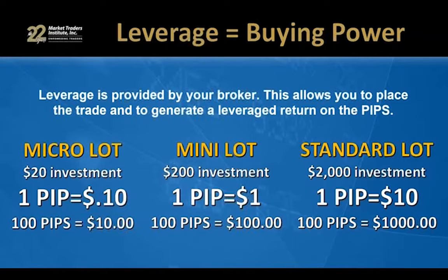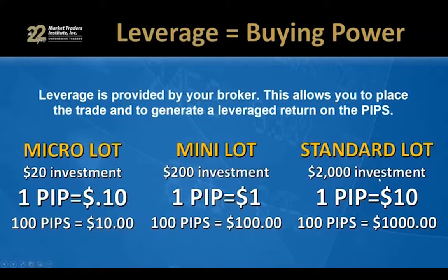There are three basic lot sizes we trade in. A micro lot is about a $20 investment from your trading account, and each PIP is worth about ten cents — so 100 PIPs generates about a $10 profit. A mini lot is about a $200 investment, each PIP is worth about a dollar, so 100 PIPs generates about $100. A standard lot is what most traders strive to achieve — each PIP is worth about $10, so capturing 100 PIPs would generate about $1,000 in profit.